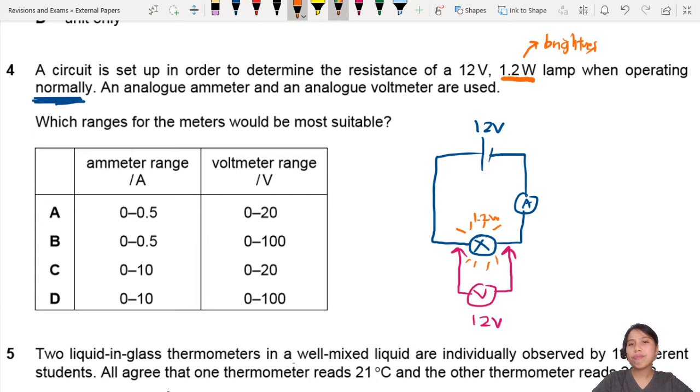This is V of the lamp, this is P of the lamp. So can you find I? I think we can if we use the equation P equals IV, we can know what the current is flowing through that lamp.